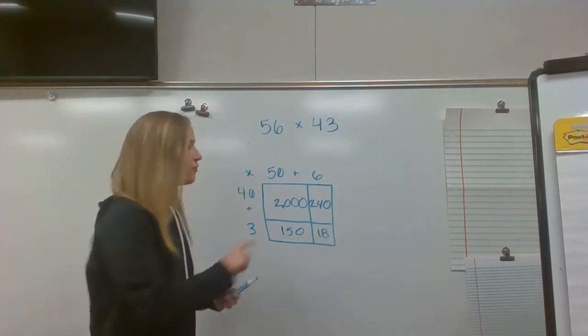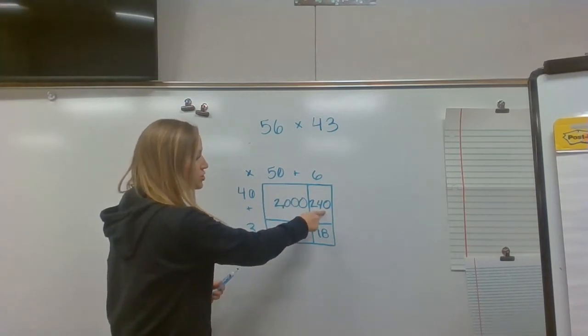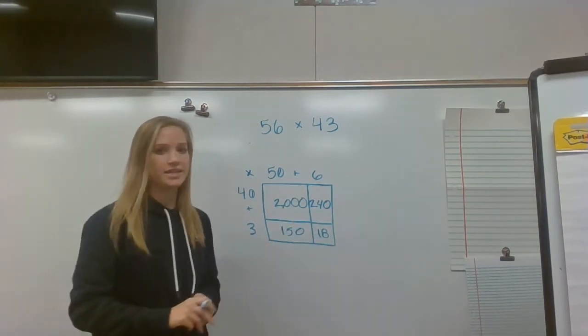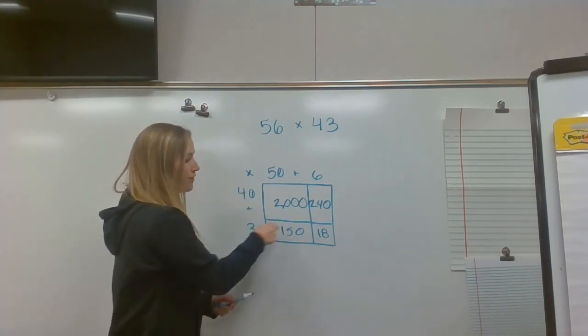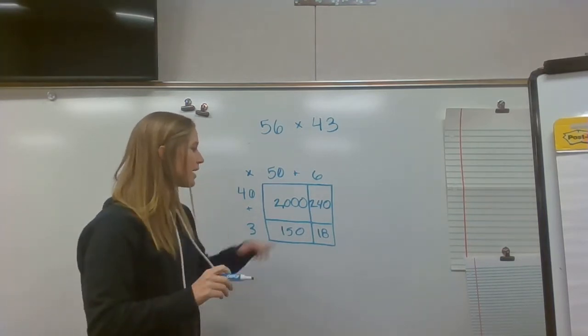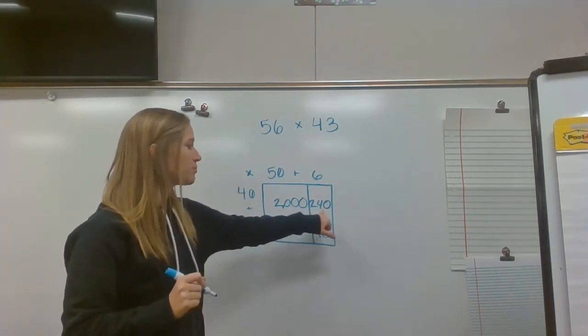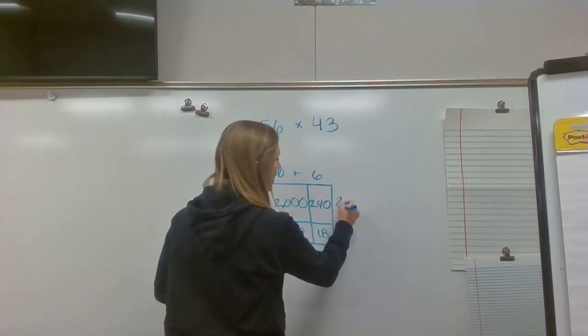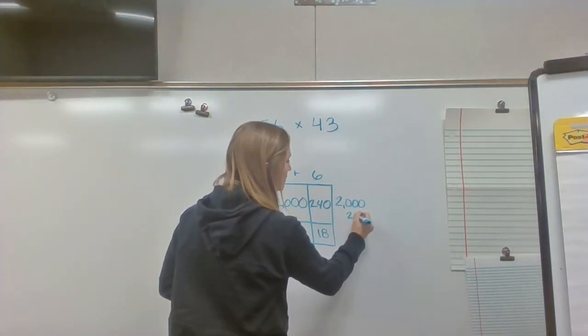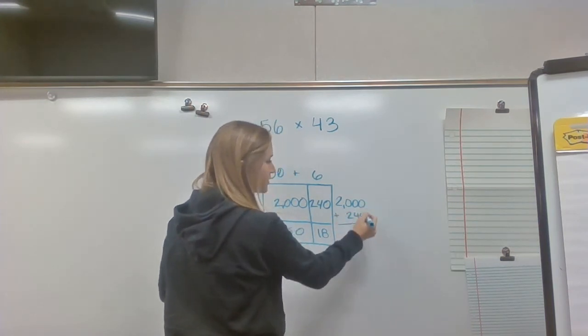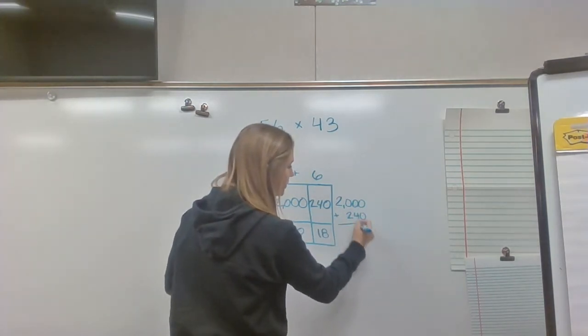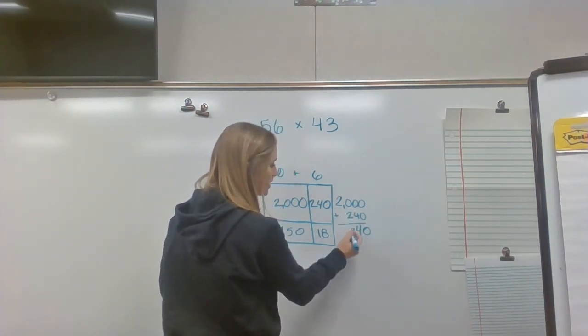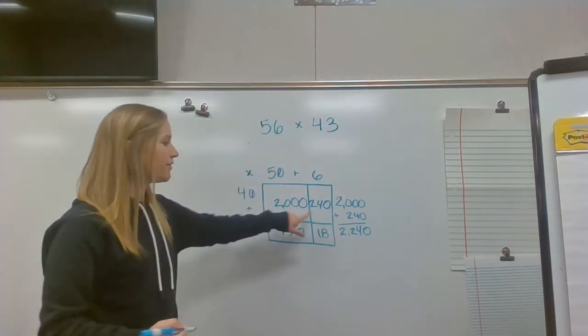Now, with expanded form, we have a plus sign here, so we need to do 2,000 plus 240 and 150 plus 18. And with a two-digit number, we now have to add both of these rows together as well. So the first thing I'm going to do is add this row. I'm going to do 2,000 plus 240, and I'm going to line that up by place value. So I have zero plus zero, which is zero. Zero plus four is four. Zero plus two is two. I see a comma, so I'm going to drop my comma down, and then I have a two. So I have the number for this first row.